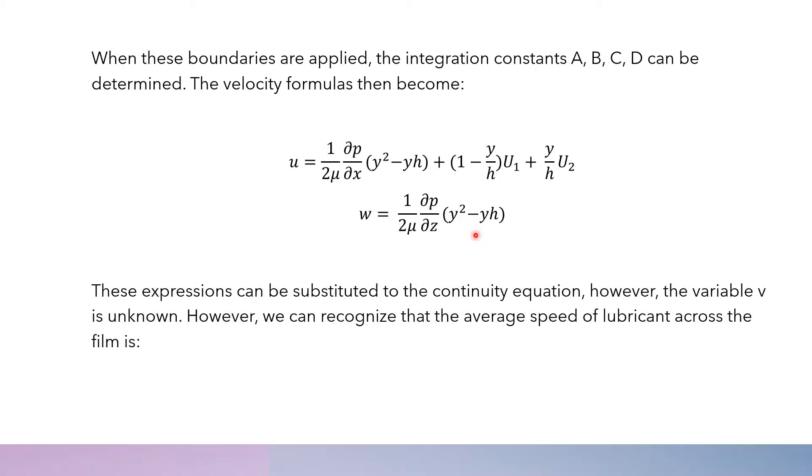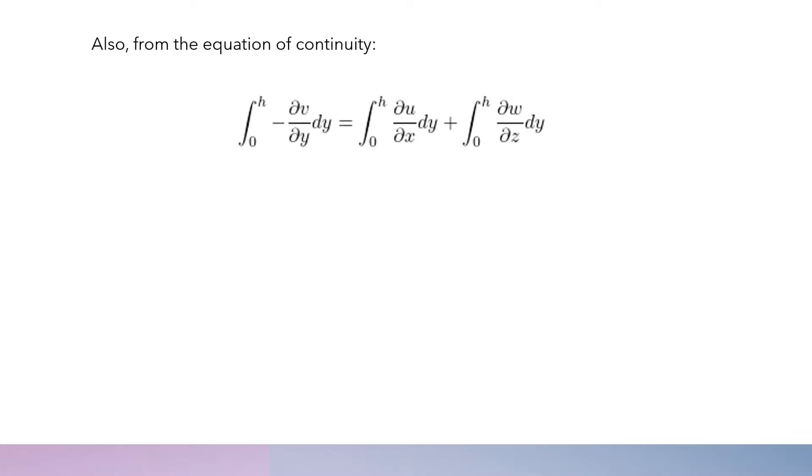We can substitute these expressions into the continuity equation. However, we still don't know the variable V. But we can recognize that the average speed of a lubricant across the film is dH/dt.